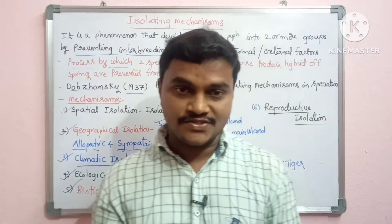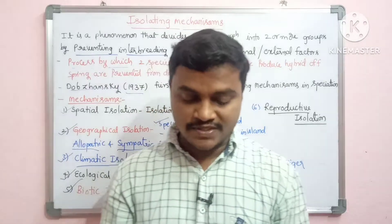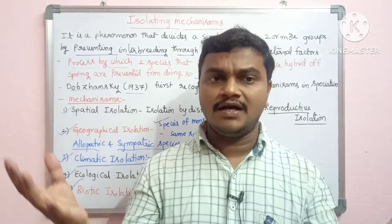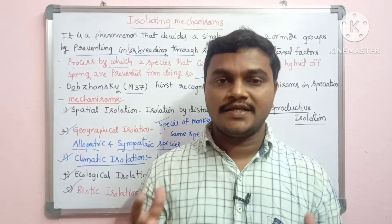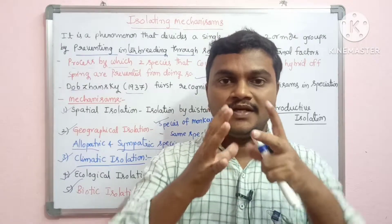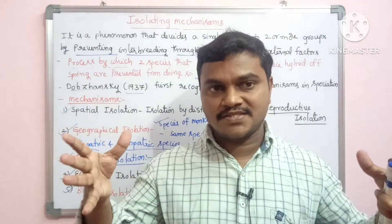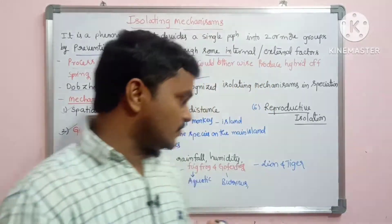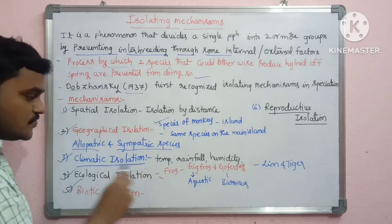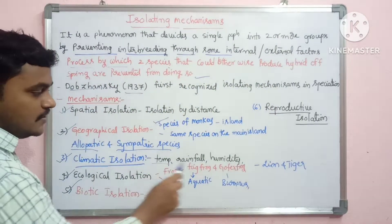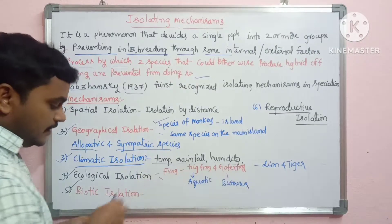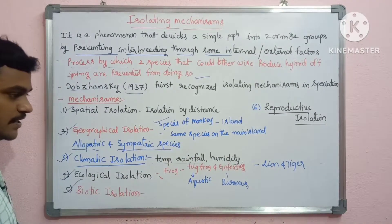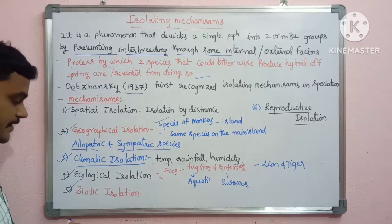Climatic isolation occurs when differences in climate such as rainfall, temperature, humidity, pressure, soil, and atmosphere prevent some species from interbreeding. These climatic factors decide isolation among species.